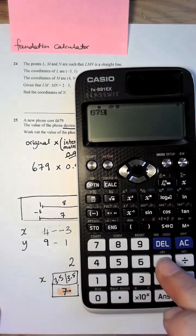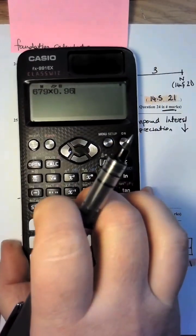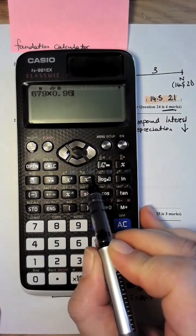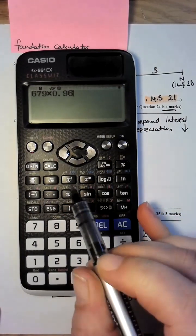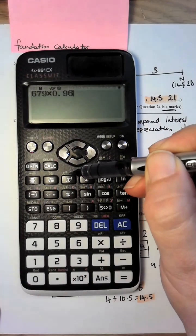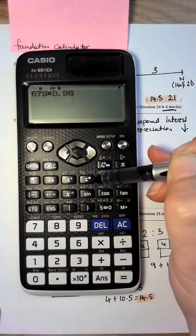679 multiplied by 0.96, now there's a button on your calculator here, just the power of something. There's also actually a button here in the yellow, on my calculator it actually says x to the power of 3, you may have that on your calculator, you may not.